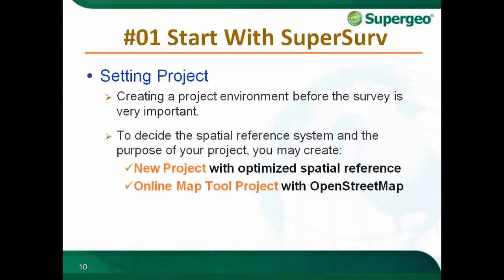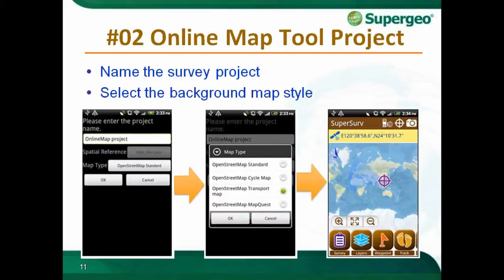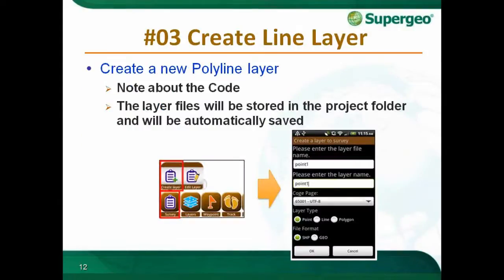The first part is setting up the project. We create a project environment before the survey, which is critical — you define the coordinate system, spatial reference systems, and whether to use the online map tool. It also allows you to name your survey project and select a background map style. We provide different OpenStreetMap styles you can use as a base map. All layer files will be stored in the project folder and automatically saved.